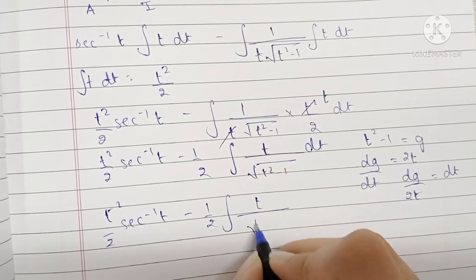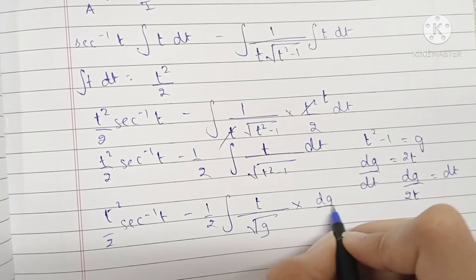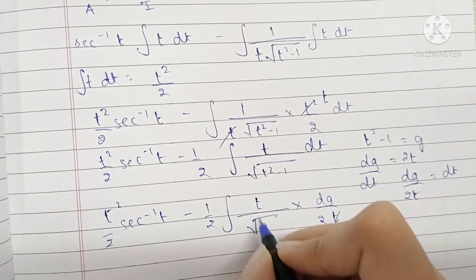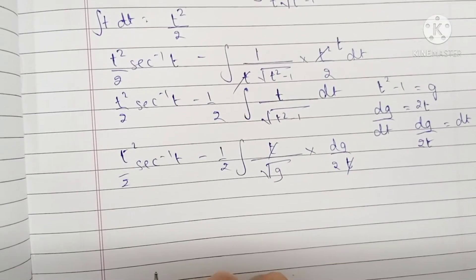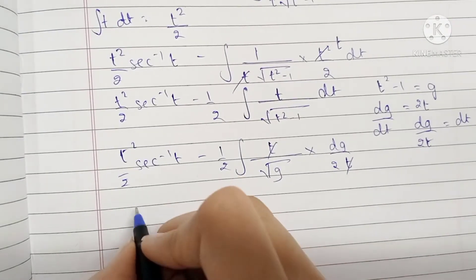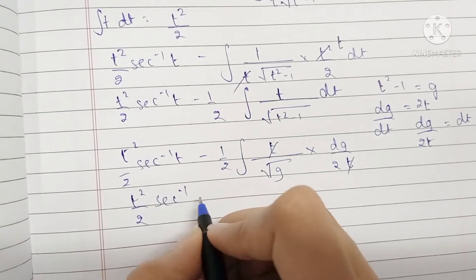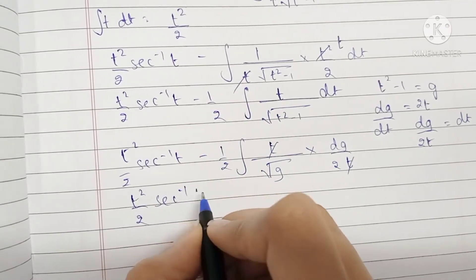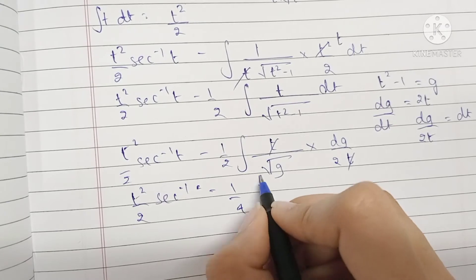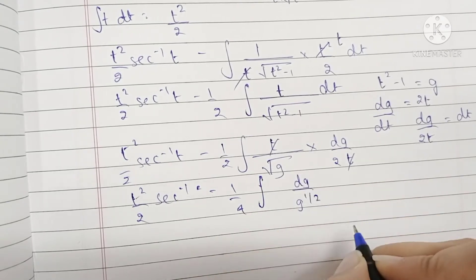The t in the numerator and denominator cancel, and we can pull out another factor of 1/2. So we have t²/2 · sec⁻¹(t) minus (1/4) times the integral of dg/g^(1/2), which is the integral of g^(−1/2) dg.